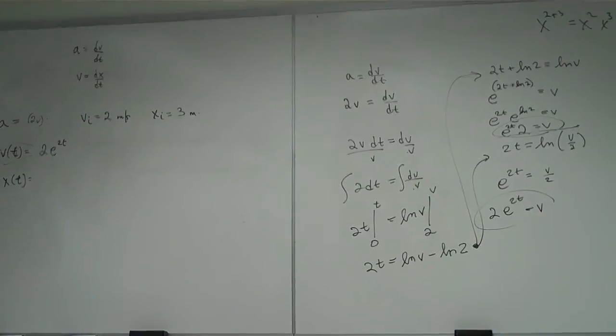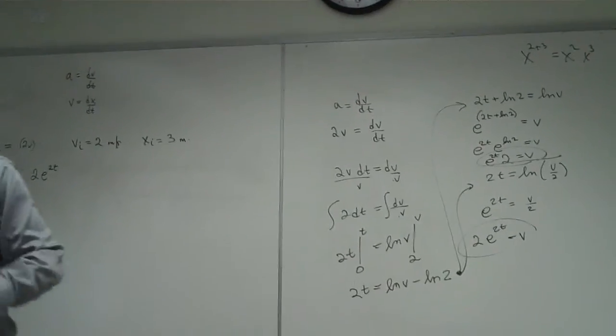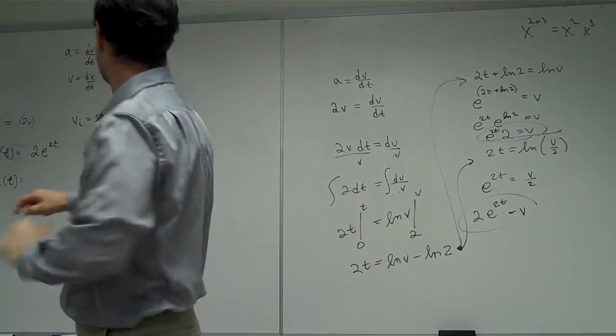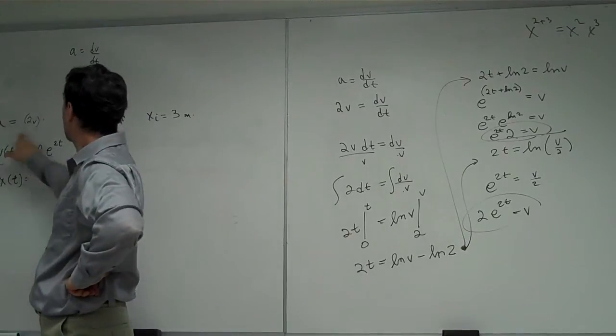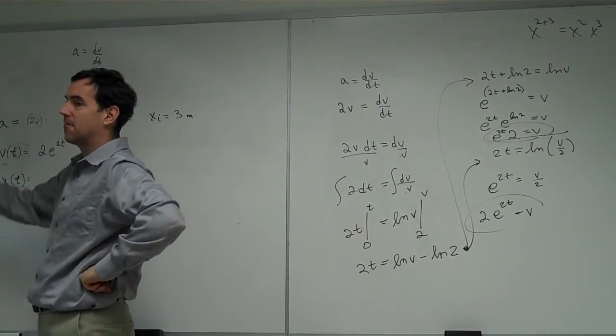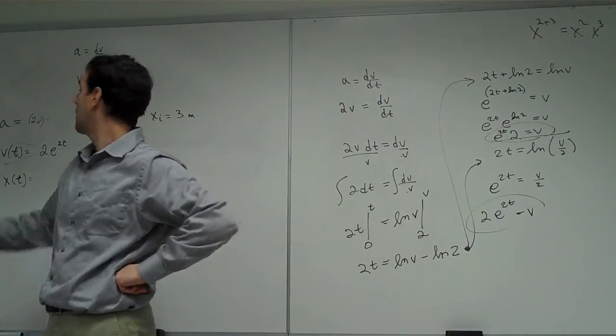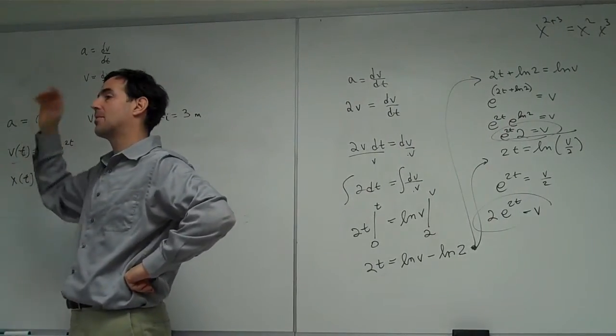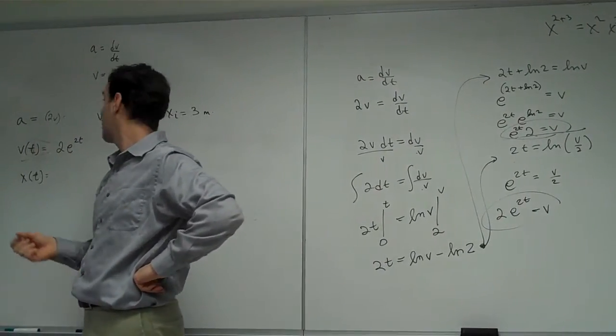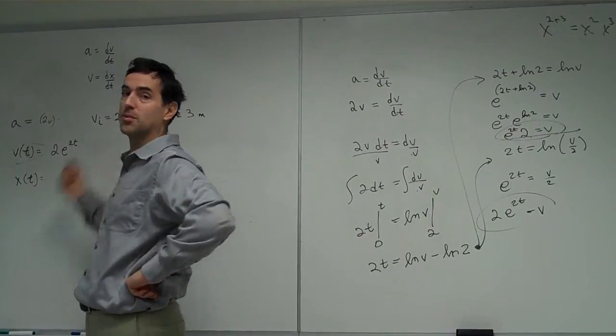All right, let's think about this answer and see if it makes sense. First, let's look at this equation and see if we can figure out what's happening in this situation. This tells me the acceleration depends on 2 times my velocity. And my initial velocity is 2 meters per second.